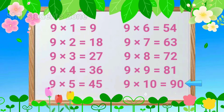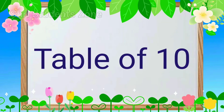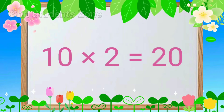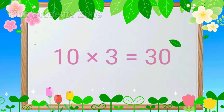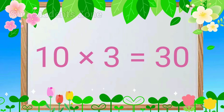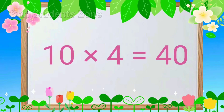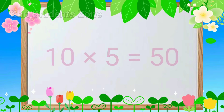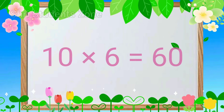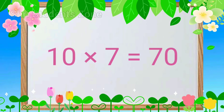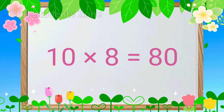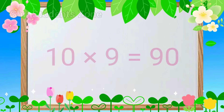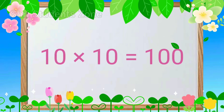Table of 10. 10 1s are 10, 10 2s are 20, 10 3s are 30, 10 4s are 40, 10 5s are 50, 10 6s are 60, 10 7s are 70, 10 8s are 80, 10 9s are 90, 10 10s are 100.